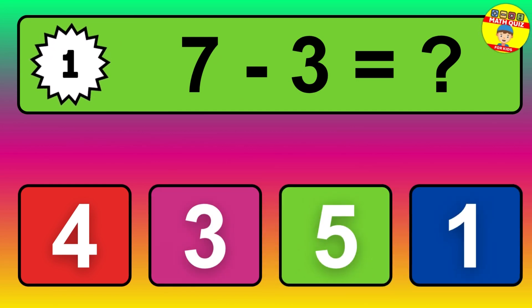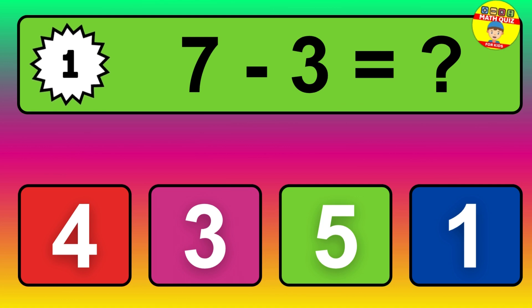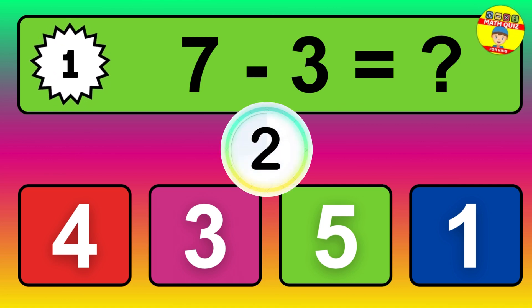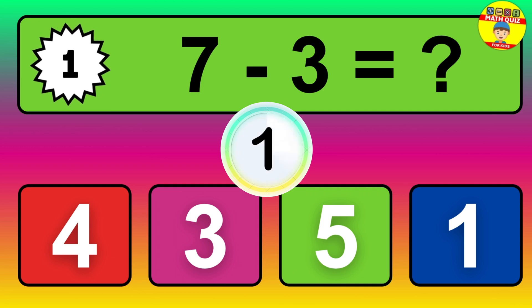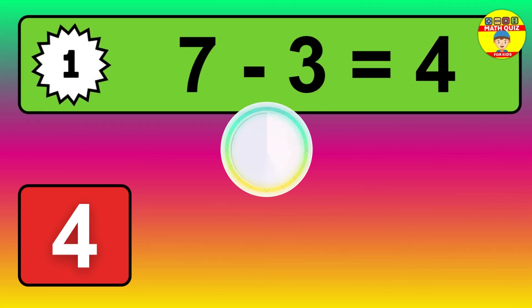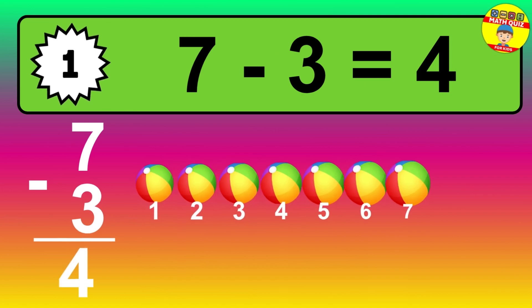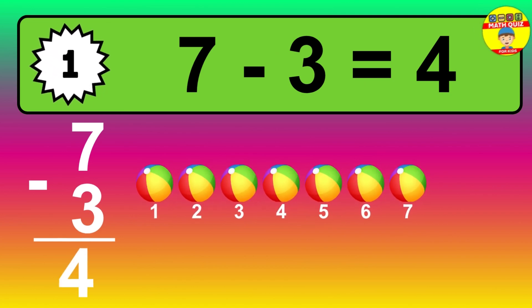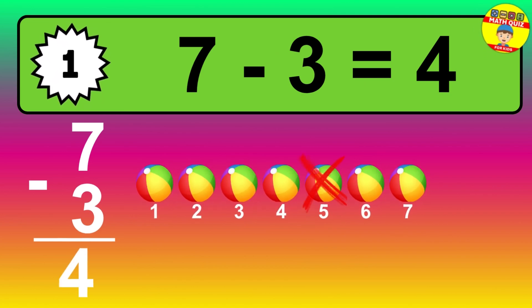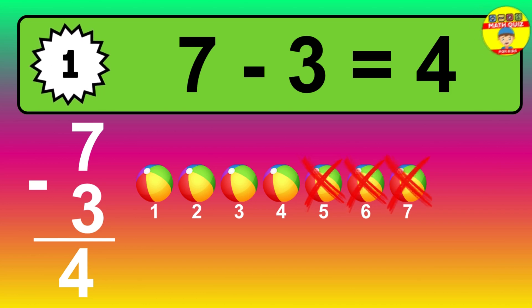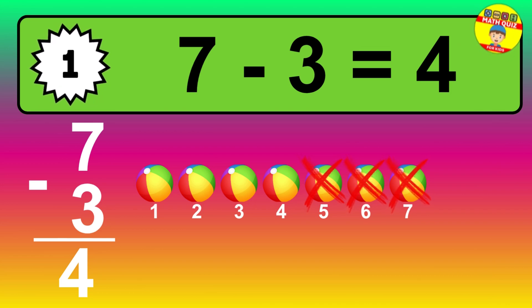Question one: seven minus three equals what? So the answer is seven minus three is four. Let's count it. One, two, three, four.